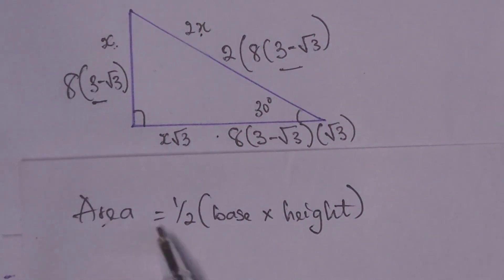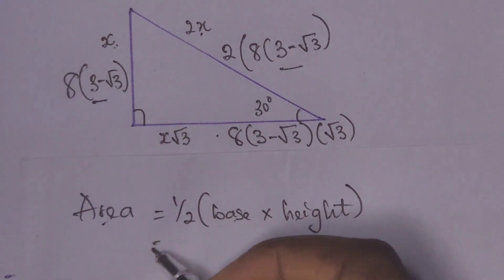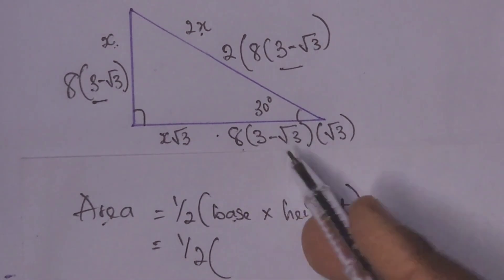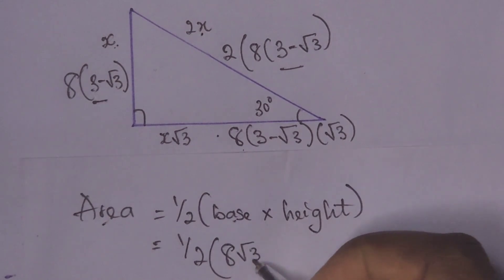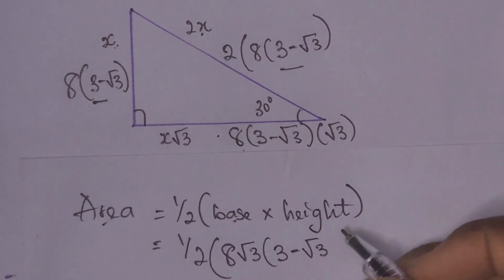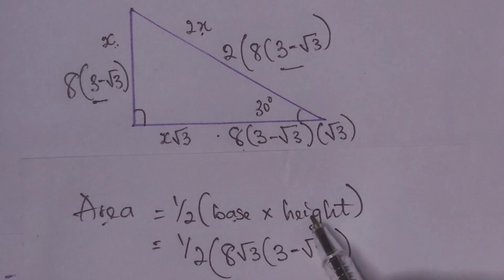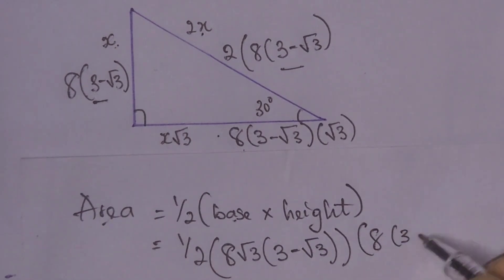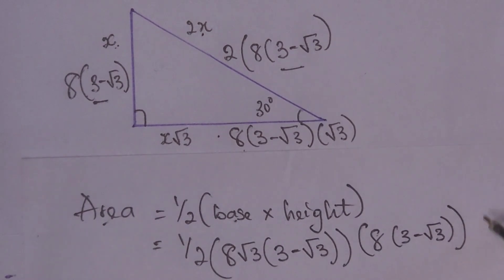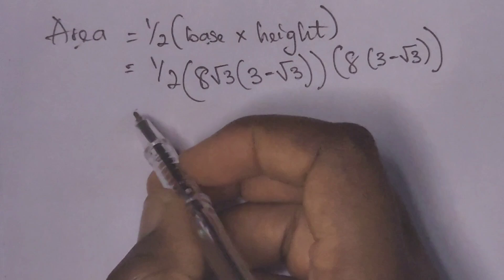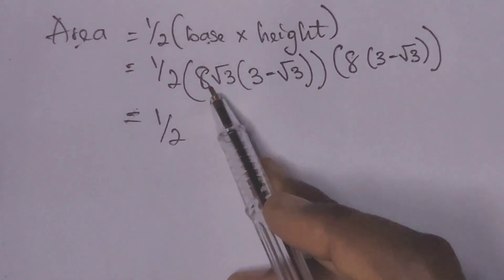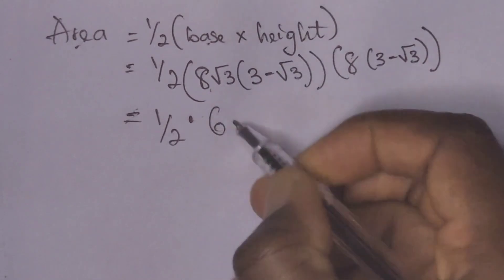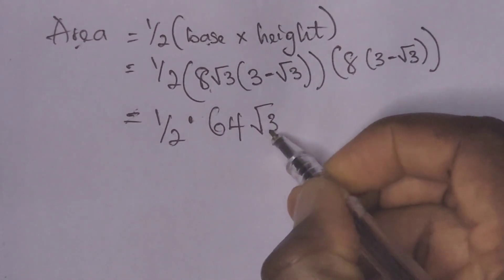The area of a triangle is half times base times height. So we have 1 over 2. Our base is 8 times root 3 times (3 minus root 3), and our height is 8 times (3 minus root 3). So when we multiply 8 times 8 we get 64, giving us 64 root 3 times (3 minus root 3) squared.